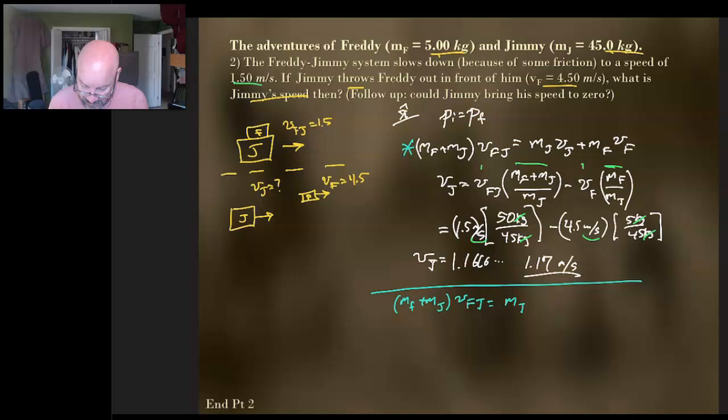So we had m_F plus m_J and that's onto the combined initial velocity. Then we've got m_J v_J plus m_F onto v_F. Now if in the end Jimmy's not moving, then that means this term here is zero. So we can kind of say, oh okay, so what does that mean? Oh well that's pretty nice because look, now my only unknown is this guy here.